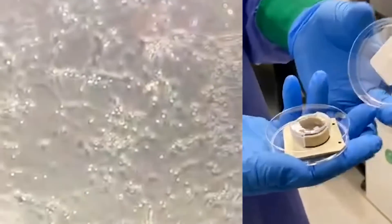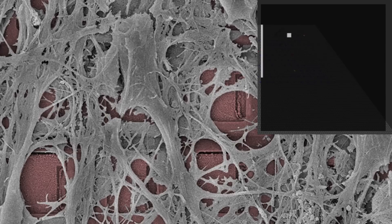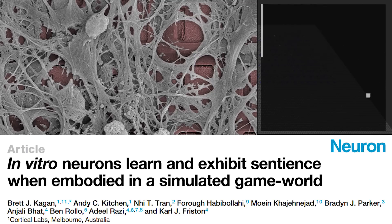This is a brain in a dish, kind of. It sucks at Pong, but it learned how to play. In some ways, it learns better than AI. Its creators say it's sentient. What does that mean, and why are they teaching brain cells to play video games?